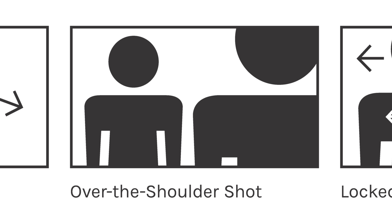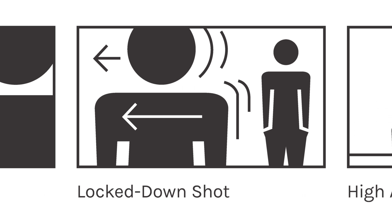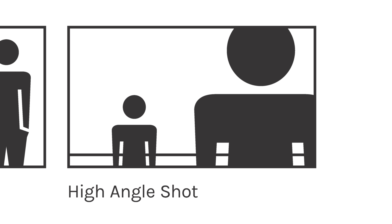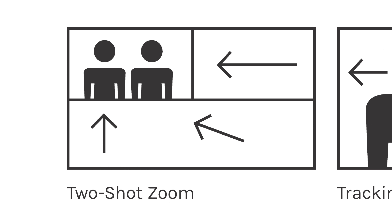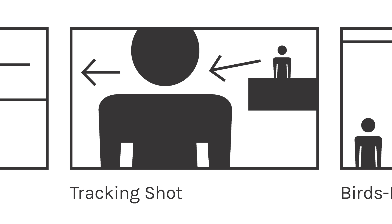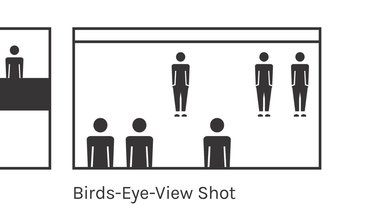A pan shot, where the camera pans around to the left and right, possibly in a circle. An over-the-shoulder shot, which is common in a lot of TV shows and movies — it establishes a relationship between two people talking. The lockdown shot, where you have a person in the background who's stable but people are coming in and out of the frame. A high angle shot, where the person in the foreground is more dominant over the person in the background. A two-shot zoom, where you have two people and the camera zooms in toward them establishing connection. A tracking shot, where the camera follows a person. And finally the bird's eye view shot, where you have a lot of people or subjects and you see everything overall.